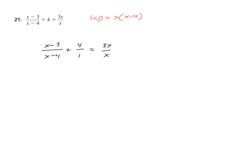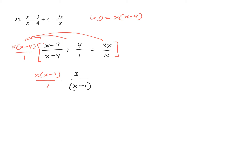Let's double-check before we continue — yes, that is the LCD. So let us group the entire equation and multiply through by that LCD. We're going to distribute 3 times, showing that distribution without doing the canceling in our head. So I get X times quantity X minus 4 over 1 times 3 over quantity X minus 4, then X times quantity X minus 4 over 1 times 4 over 1, and then X times quantity X minus 4 over 1 times 3X over X.